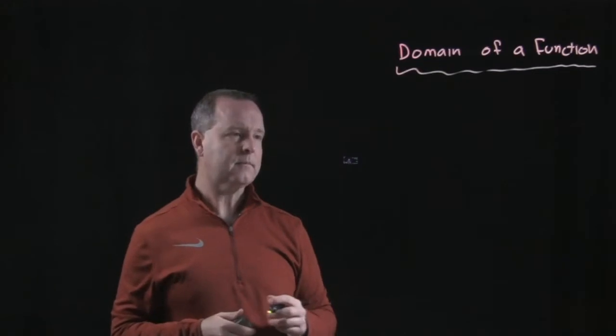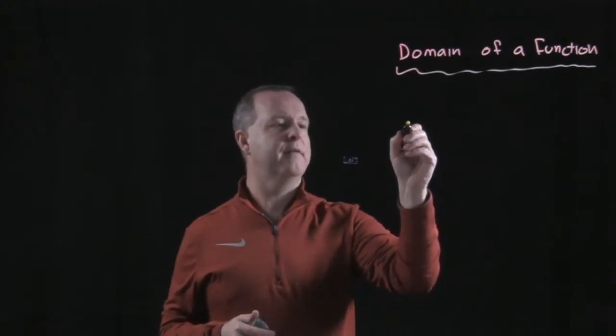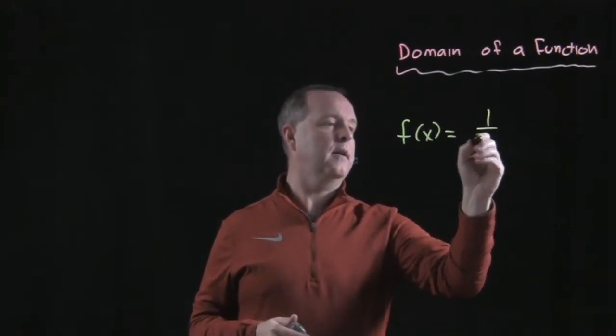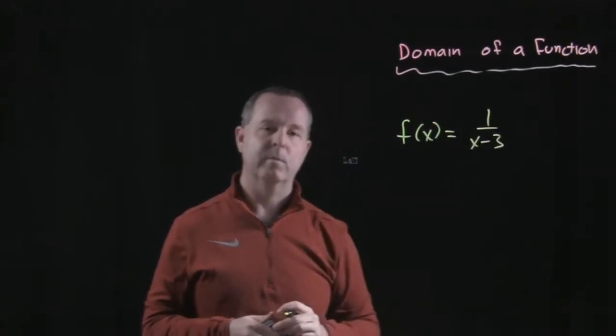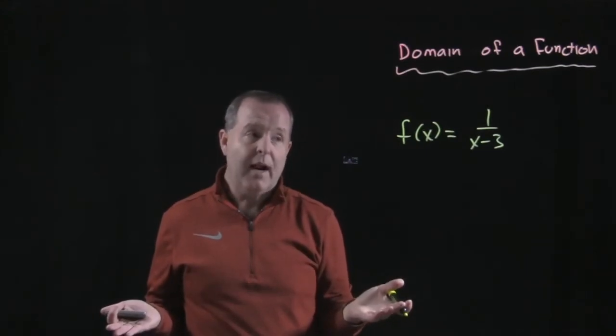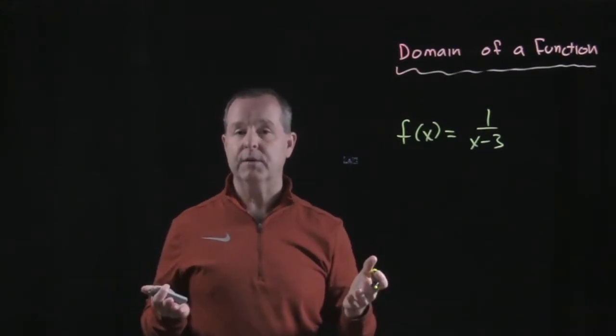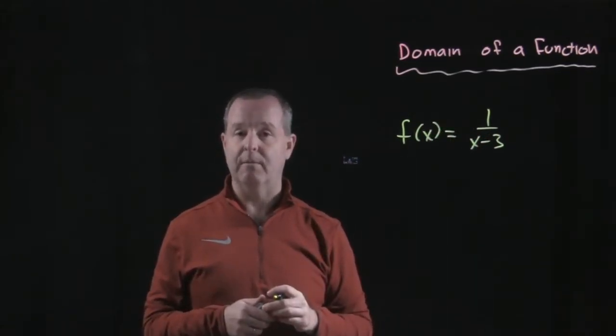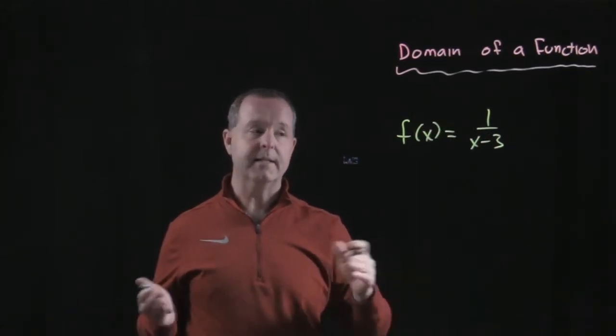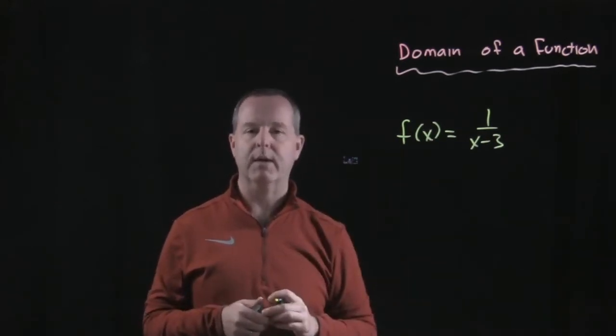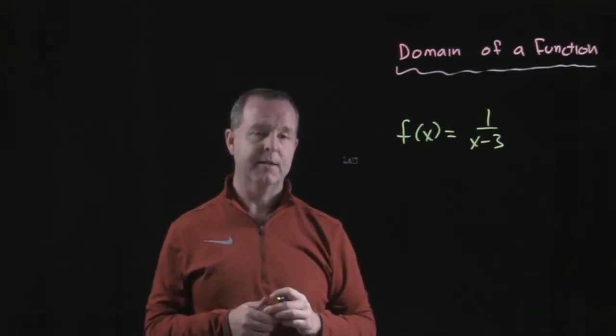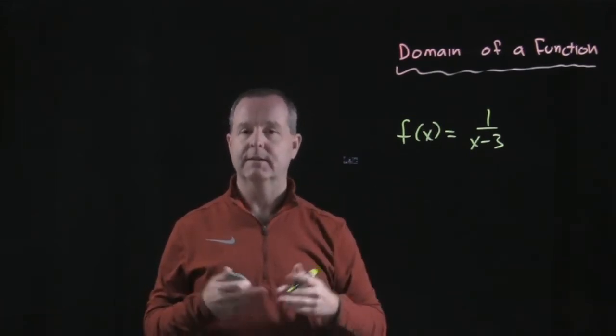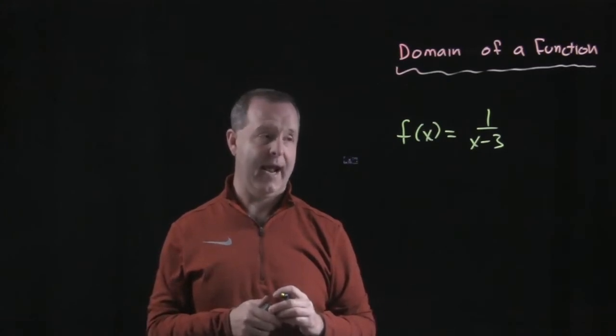For example, if we have some function f(x) equals 1 over x minus 3, we need to figure out what values are part of our domain. We understand that this one is basically a division problem, and dividing by 0 is something that we need to avoid when we're working with various rational expressions. So we need to exclude all the values that make the function crash, or where the function does not exist.